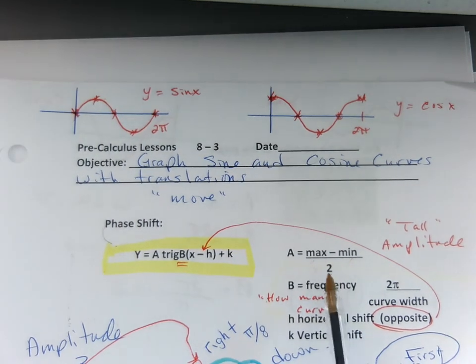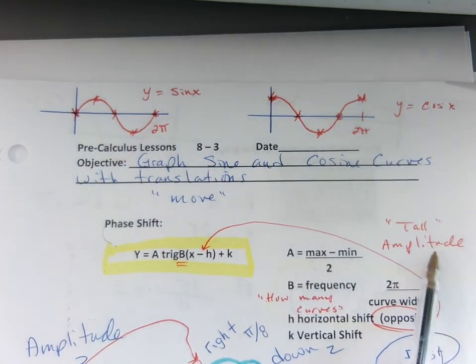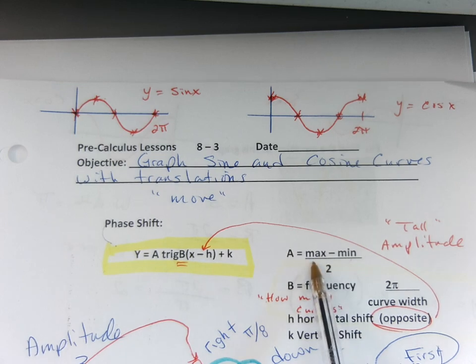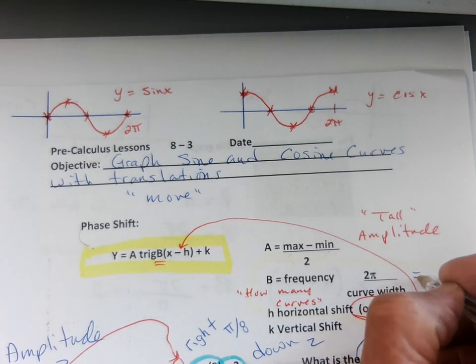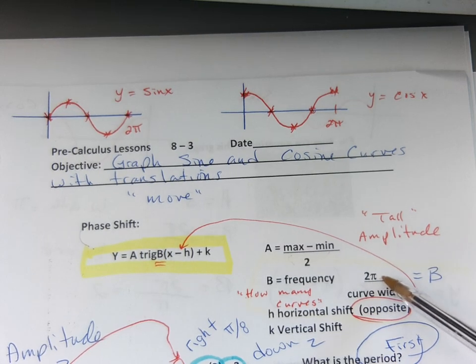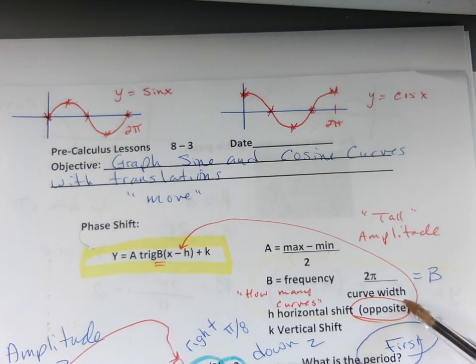So we know that a is the amplitude, it's how tall it is. One way to find it, if you can't figure it out, is the maximum of the graph minus the minimum divided by 2. b is frequency, how many curves do you have? One way to find b is to take 2π, always 2π, divided by the width of the curve, and that'll give you the b.